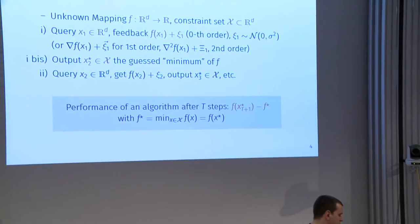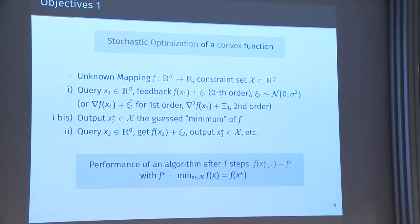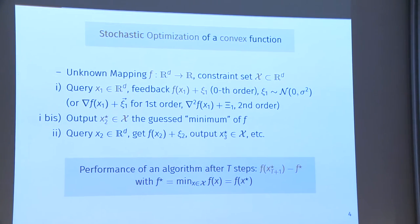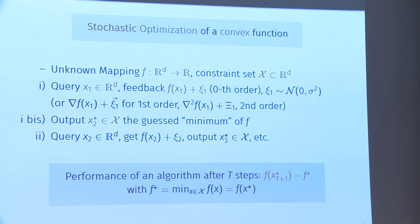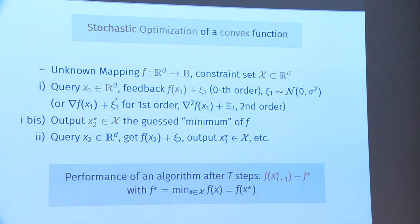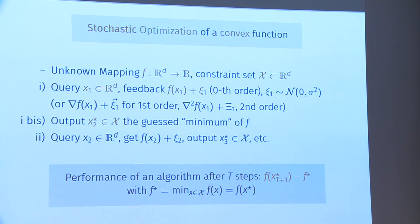Our objective is stochastic optimization of a convex function. You have this unknown mapping f to minimize over a constraint set X, a subset of R^d. When you make the first query x1, you get feedback — the value of f at x1 plus some noise. The feedback can differ depending on computational power: you can get the full Hessian for a Newton step, or just the gradient, or just the value of f. In our zero-order setting, every query gives a noisy value: f plus noise, or gradient plus noise.